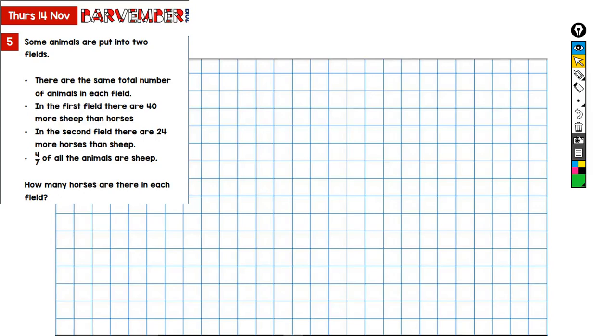Okay, another Barvember bar modeling question. Some animals are put into two fields. There are the same total number of animals in each field. In the first field there are 40 more sheep than horses, and in the second field there are 24 more horses than sheep. Four-sevenths of all the animals are sheep.